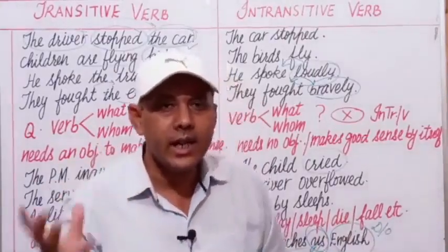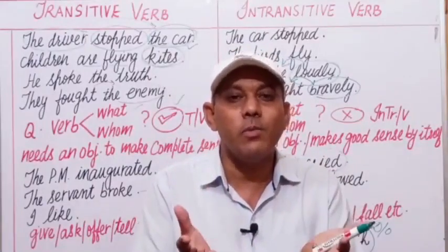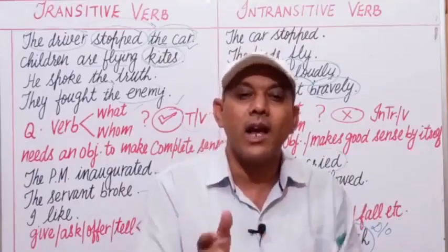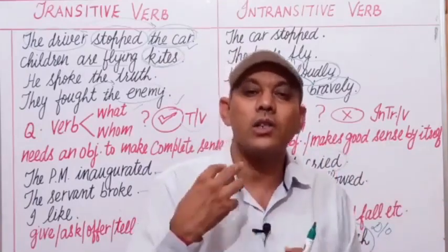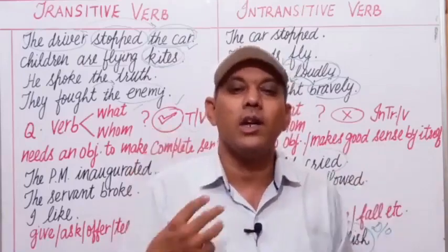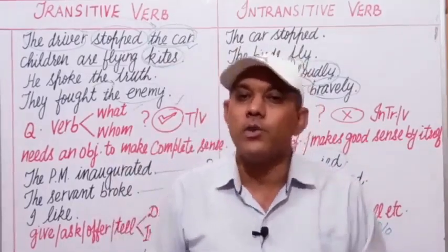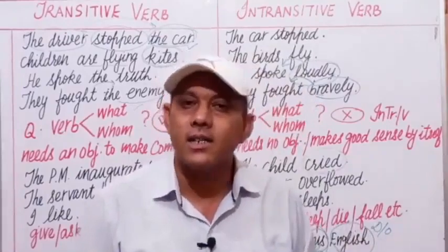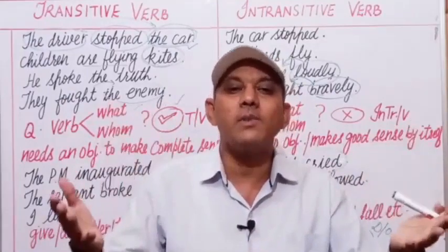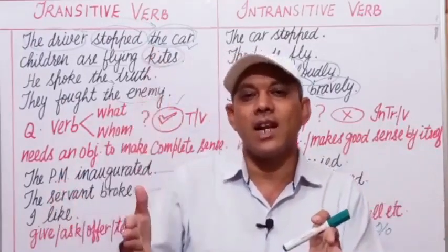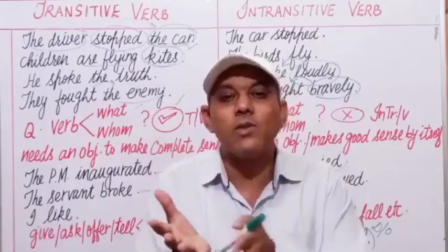'He gave me a wristwatch.' The direct object is 'a wristwatch.' Whom did he give it to? To me — 'me' is the indirect object. We can say there are some verbs which are transitive and some which are intransitive. Many verbs, however, can be used both transitively and intransitively.